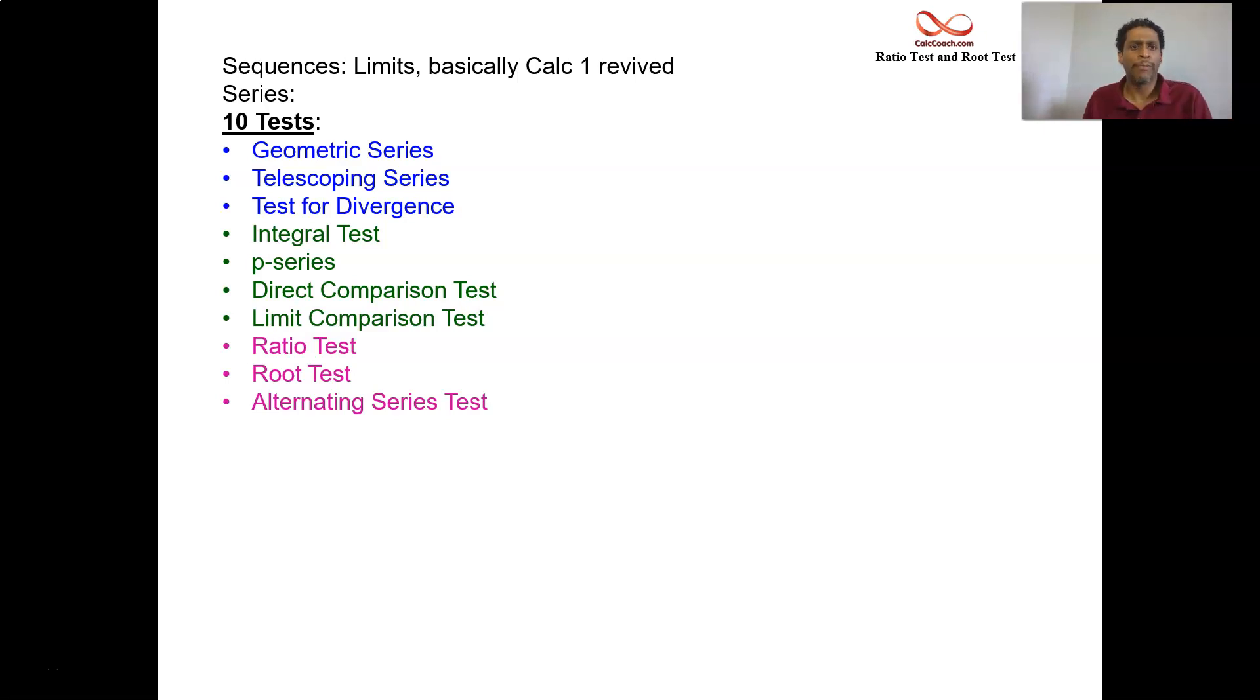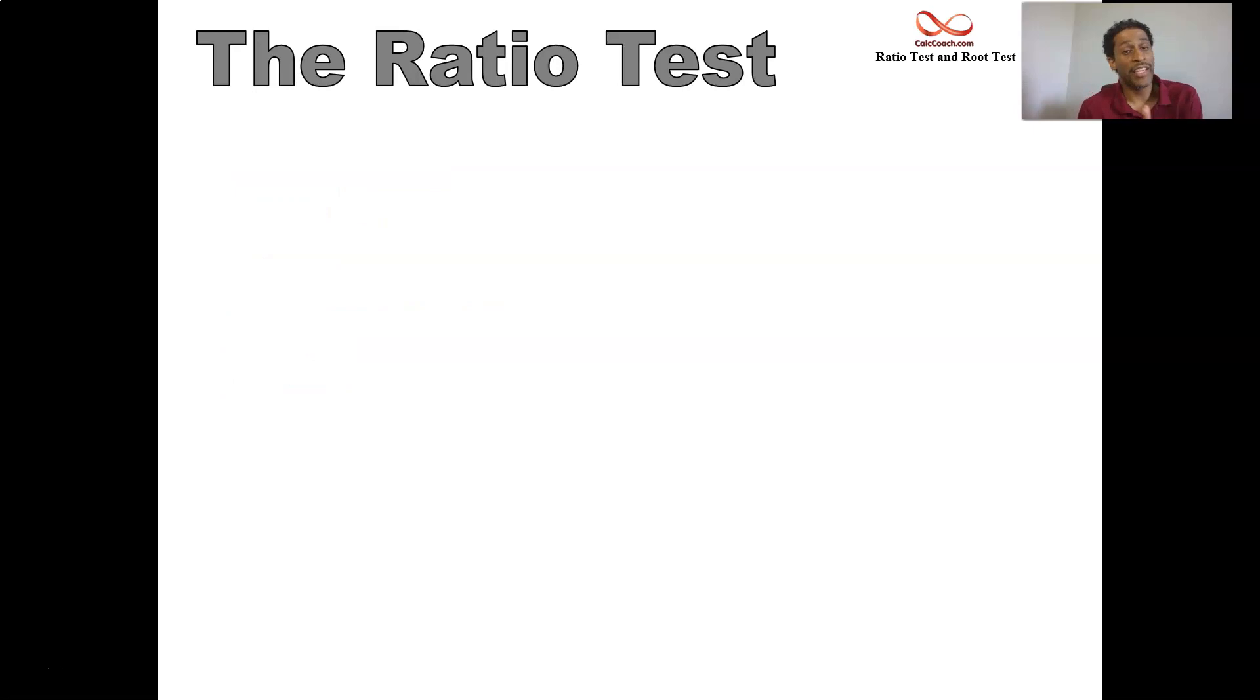That represents an overview of where we were, where we're headed. Let's go to the ratio test now. The ratio test says the following: if you have a series where the terms inside the series are called a sub n, if that a sub n represents a sequence, then what we can do with that sequence is divide successive terms.